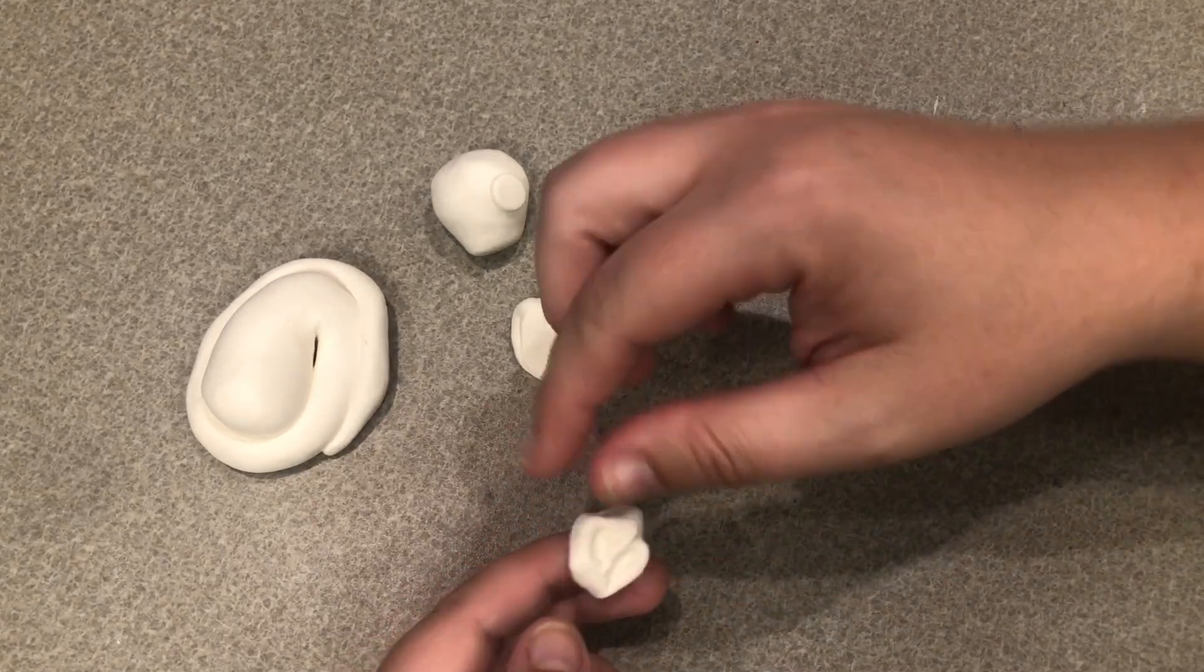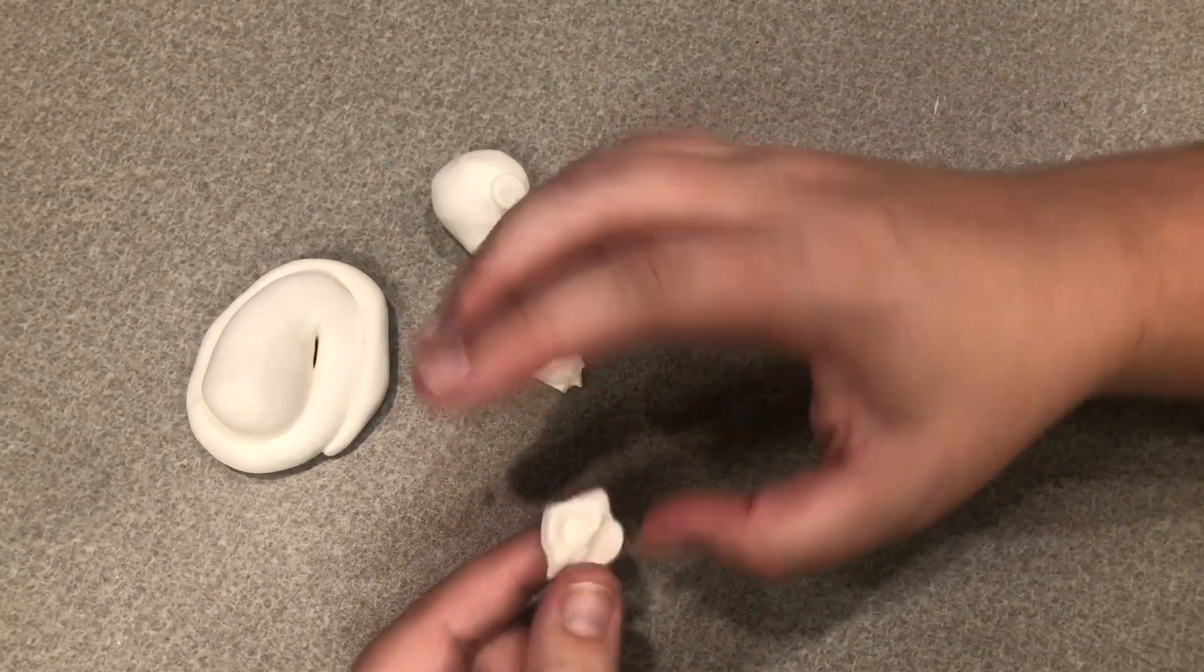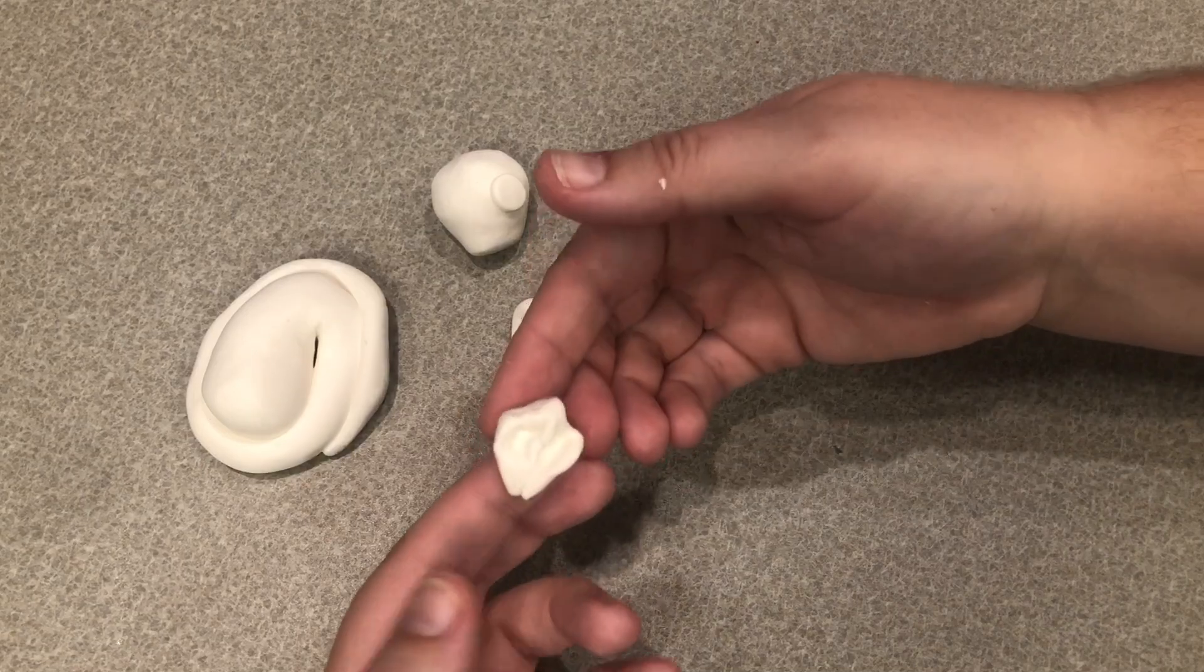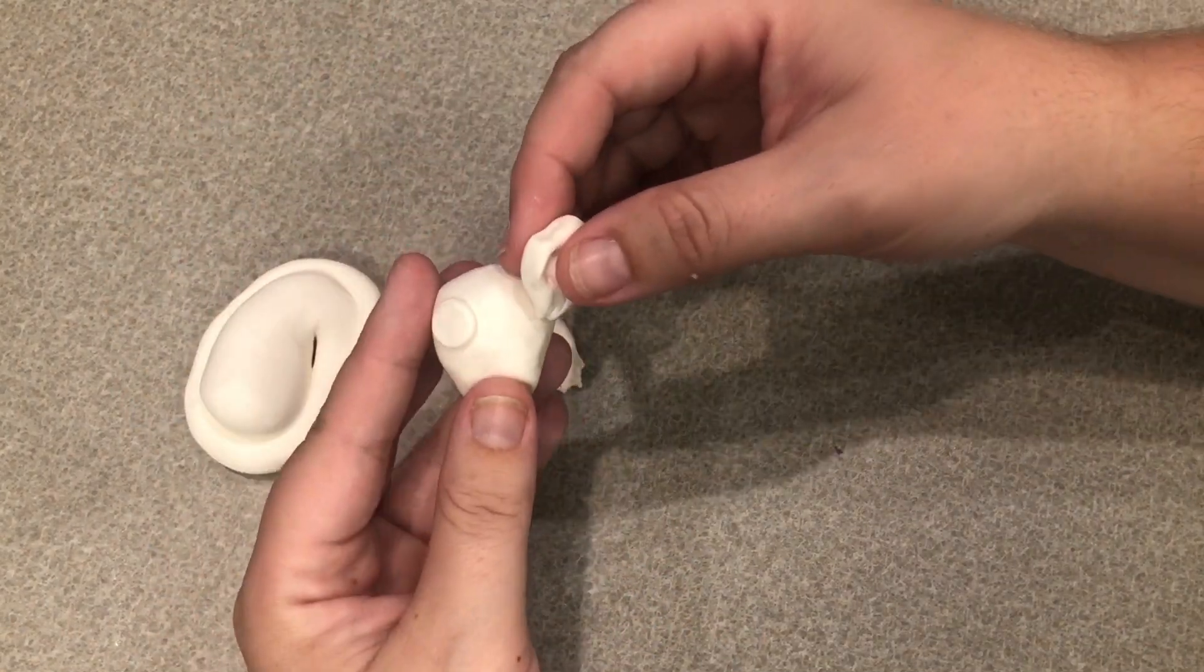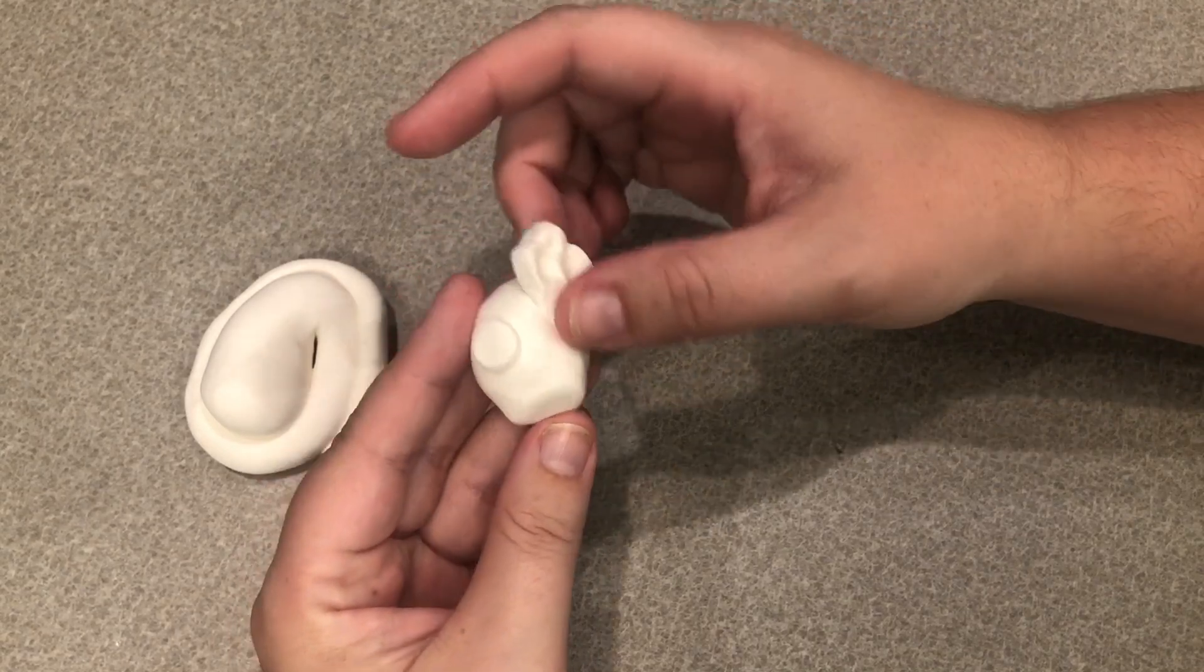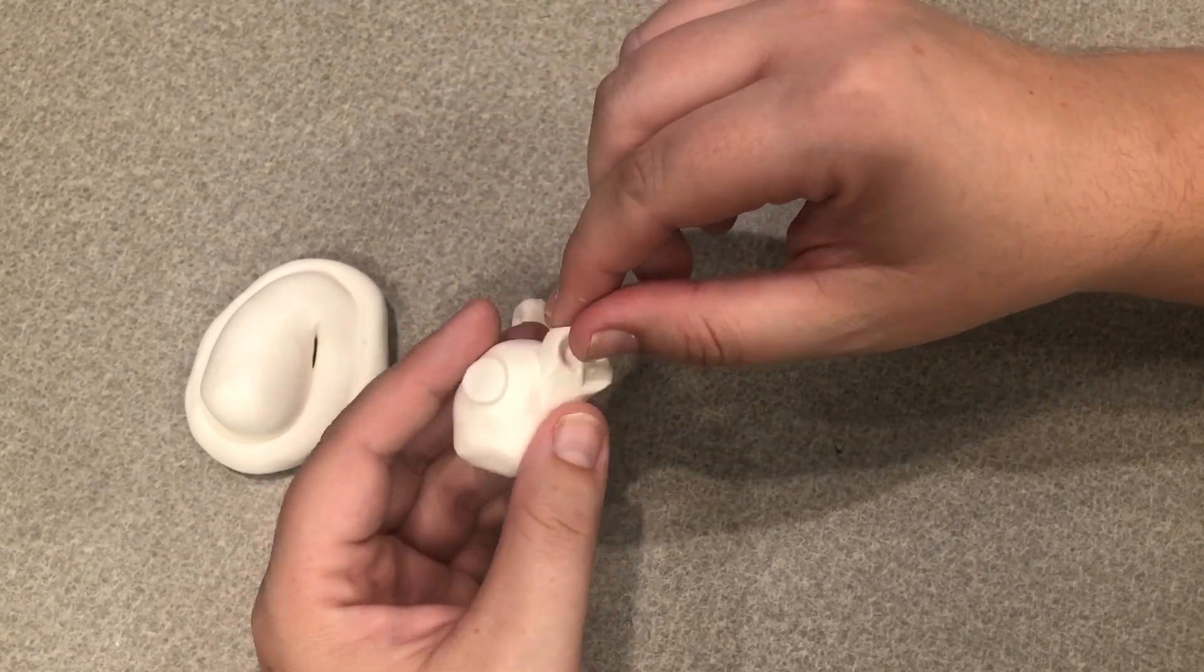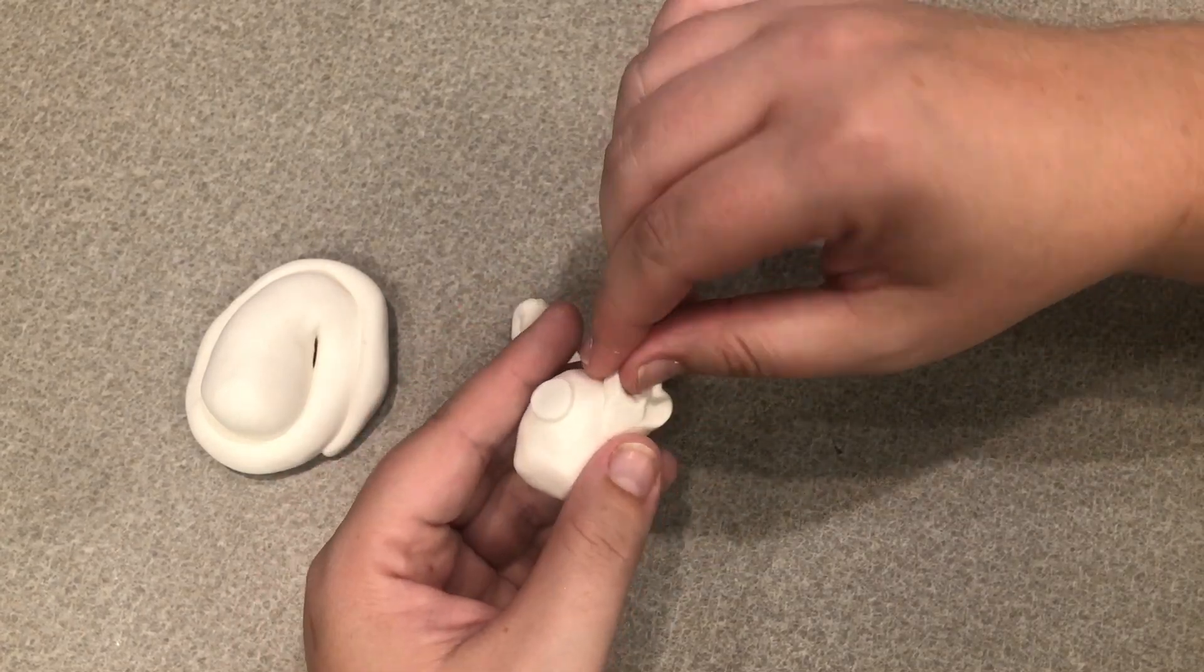You may have to do a few more adjustments once it's up off the table or whatever surface you're working with and then we can attach the little ear to the side of the head and just gently press it on and then you can reshape anything you feel like you need to reshape.